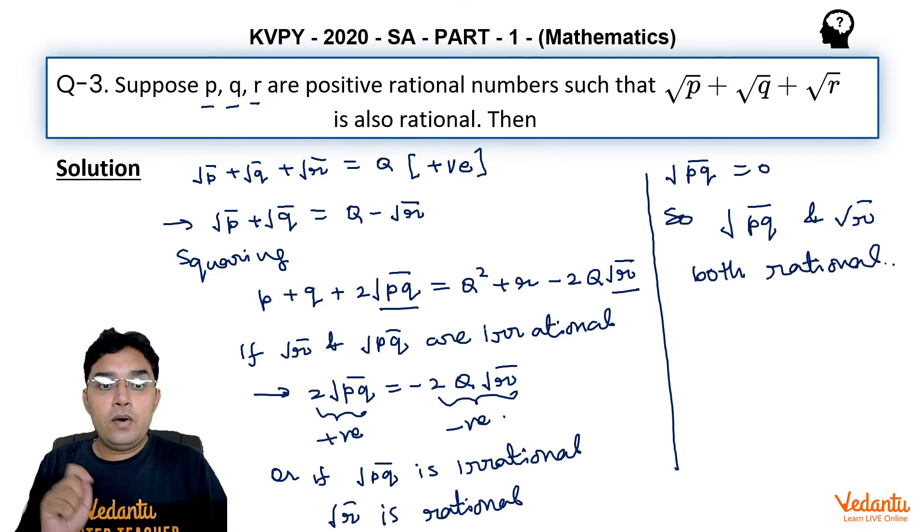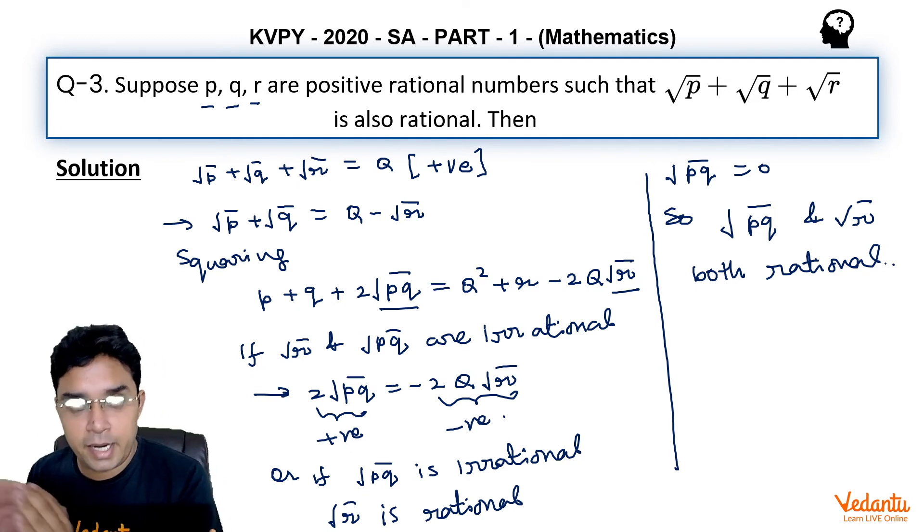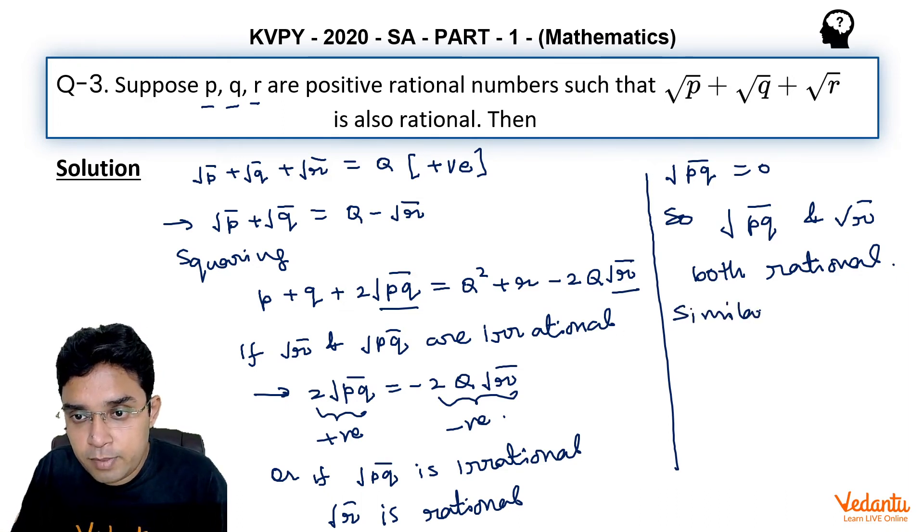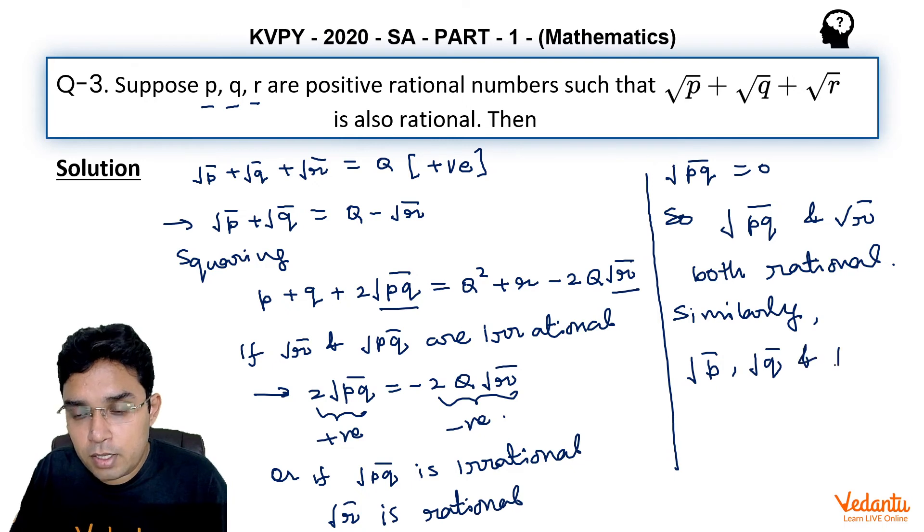Now, as I have done this by taking only √r on the right-hand side, I can do it for √p and √q also. So we can say that similarly, √p, √q, and √r—all three are rational numbers.